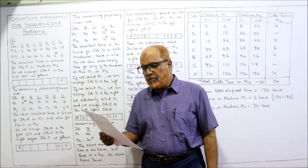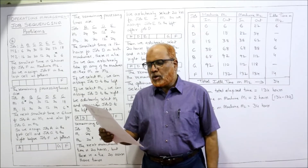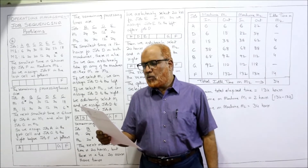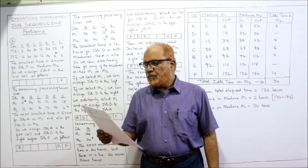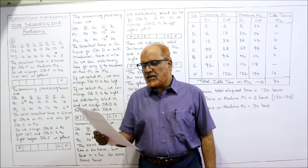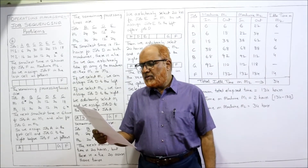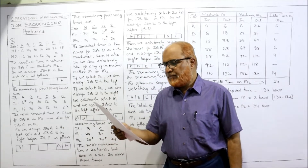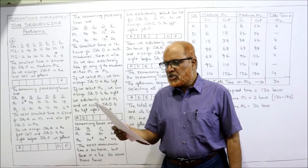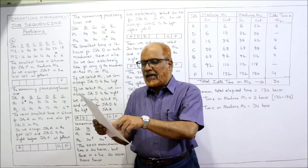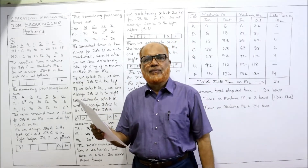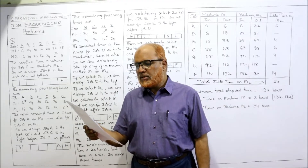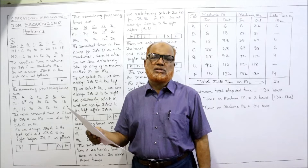Problem number two: seven jobs go first over machine M1 and then over machine M2. Processing times in hours are given for jobs A, B, C, D, E, F, G on machine one and machine two. Find the optimal sequence in which the jobs should be processed.